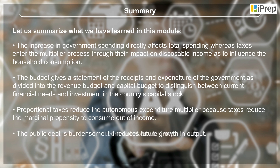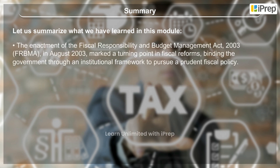The public debt is burdensome if it reduces future growth in output. The enactment of the Fiscal Responsibility and Budget Management Act 2003 (FRBMA) in August 2003 marked a turning point in fiscal reforms, binding the government through an institutional framework to pursue a prudent fiscal policy.